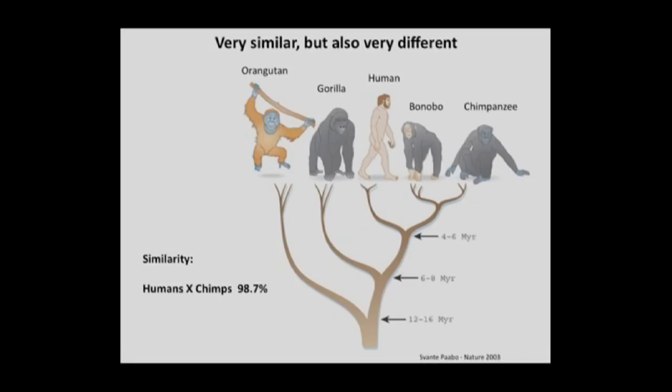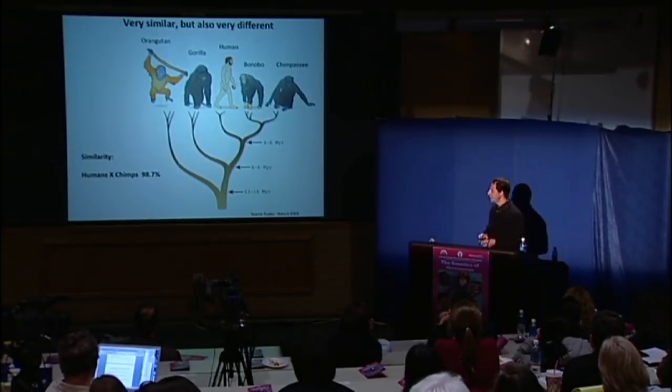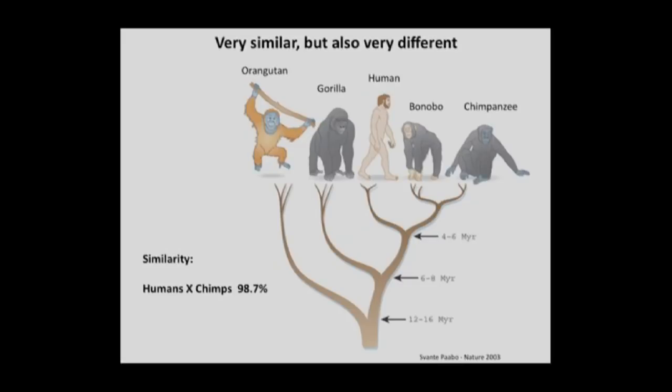The ultimate idea is to generate induced pluripotent stem cells from all primates, but we decided to focus on bonobos and chimpanzees and compare them with humans. Humans and chimps share about 99% of alignable sequence — compared to, for comparison, about 50% alignable sequence with bananas — yet they have very different behaviors and anatomy.